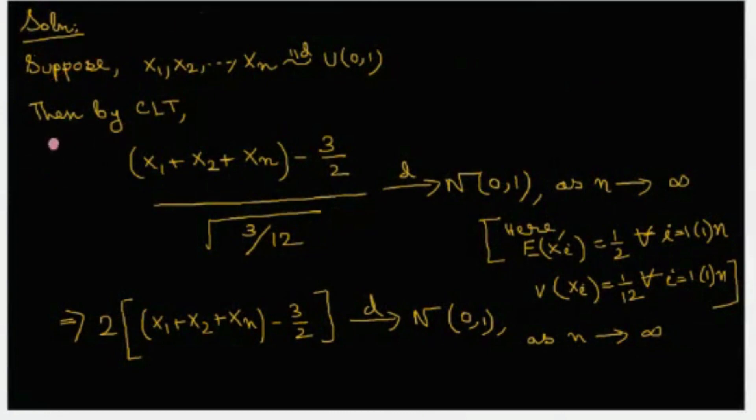Then by the central limit theorem we have that (x1 plus x2 plus xn minus 3/2) which is the expectation, because each expectation of xi is equal to 1/2, divided by square root of variance which turns out to be √(3/12) because variance of each xi is 1/12, converges in distribution to normal 0,1 as n tends to infinity.